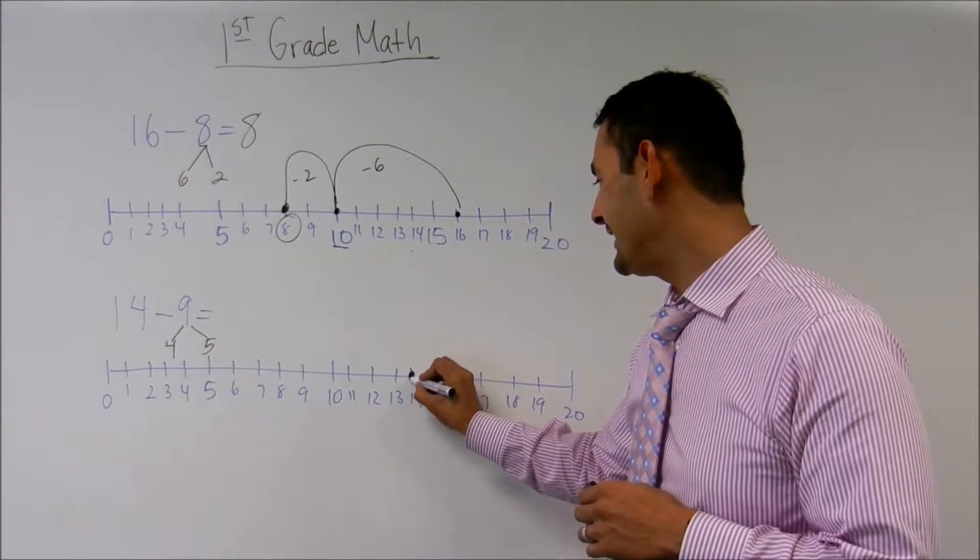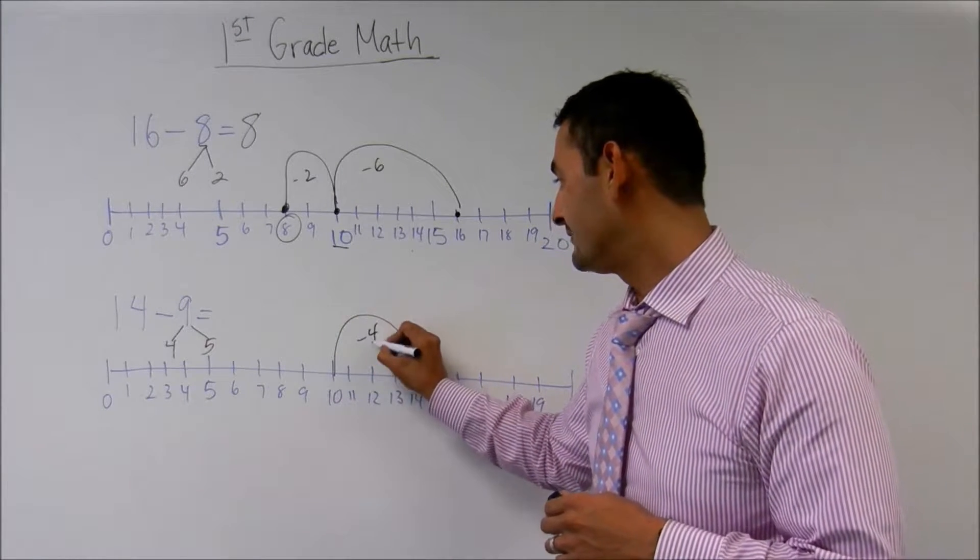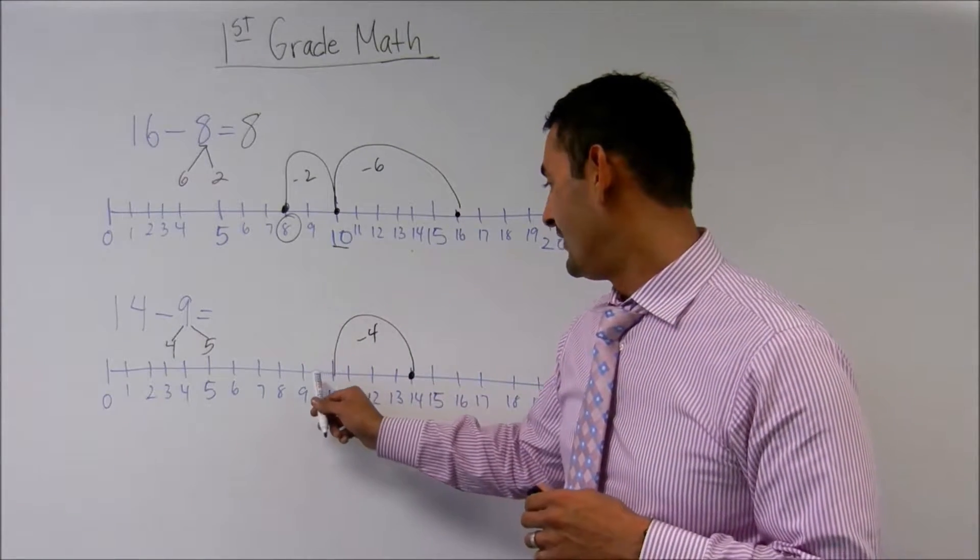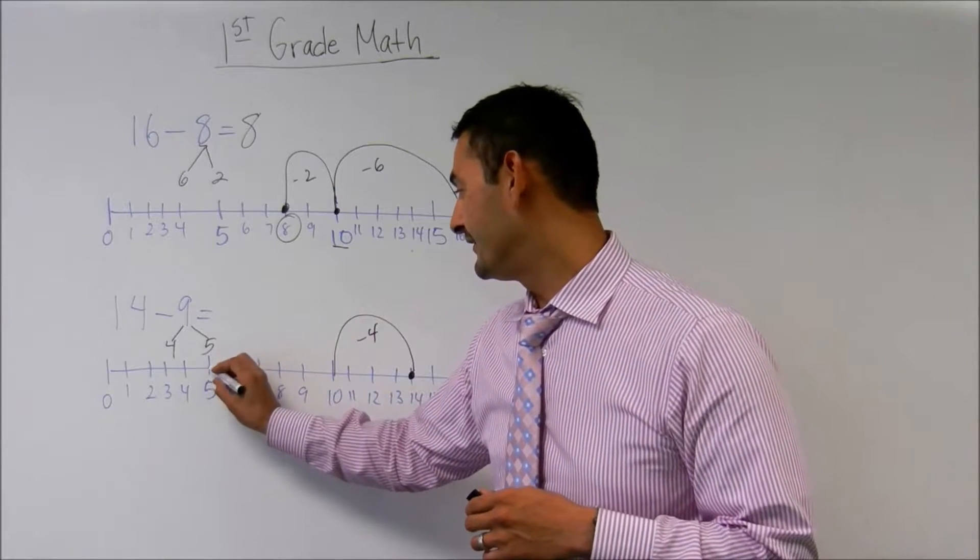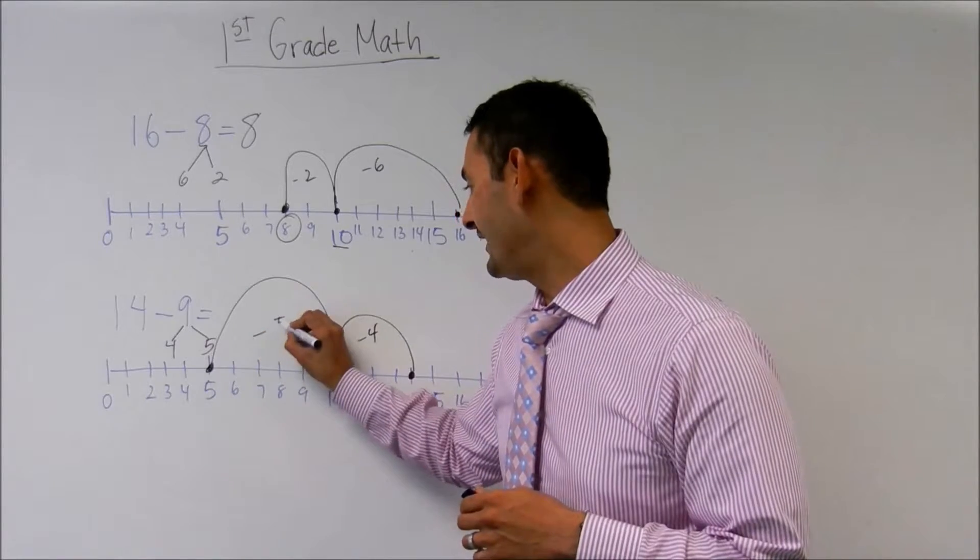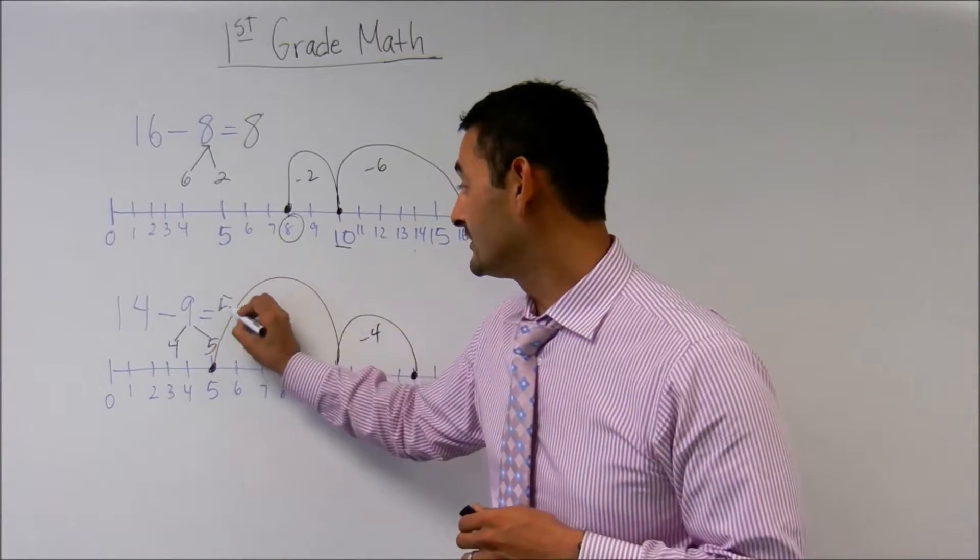So I'm going to start my number line here. I'm going to jump all the way to 10, that's minus 4. And now I just have to do minus 5 more. 1, 2, 3, 4, 5. And I'm going to make this jump, which is minus 5, and 14 take away 9 equals 5.